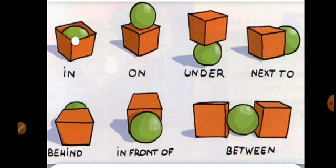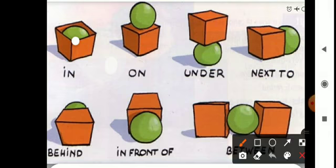Then 'under' — under means नीचे. यह देखिए, जो ball है वो box के नीचे है — the ball is under the box. Then 'next to' — means के बाजू में. पहले box है और फिर box के बाद ball है — the ball is next to the box.